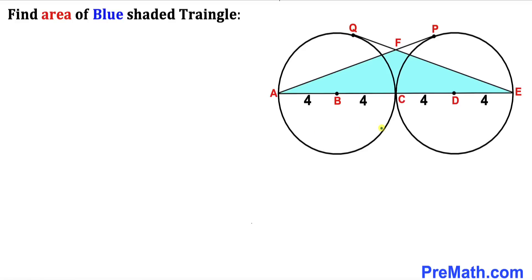Welcome to pre-math. In this video we have got these two identical circles with radius 4 that are tangent to each other, as you can see in this diagram, such that B and D are their centers. Moreover, A, P, Q, and E are the tangent points to these circles, and now we are going to calculate the area of this blue shaded triangle.